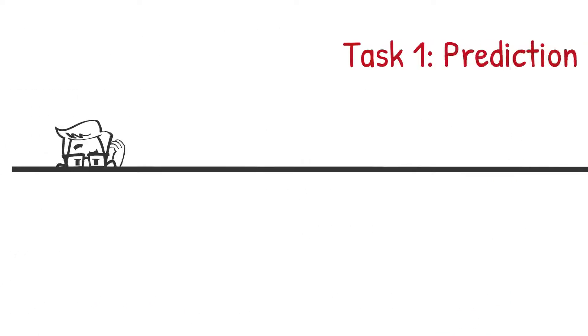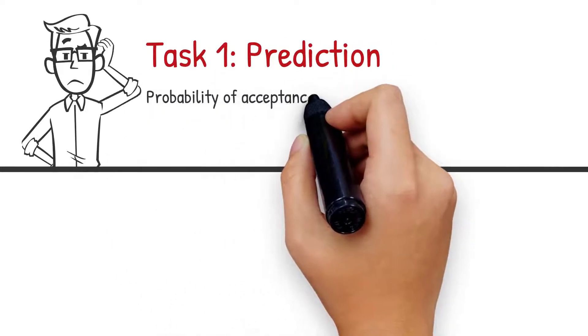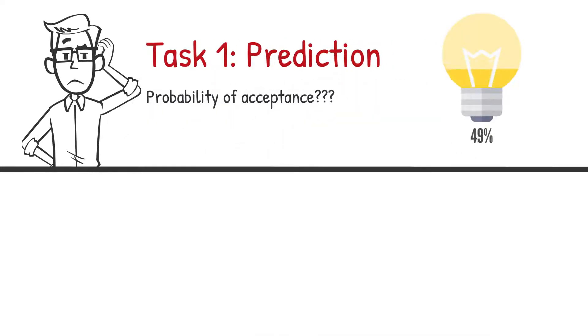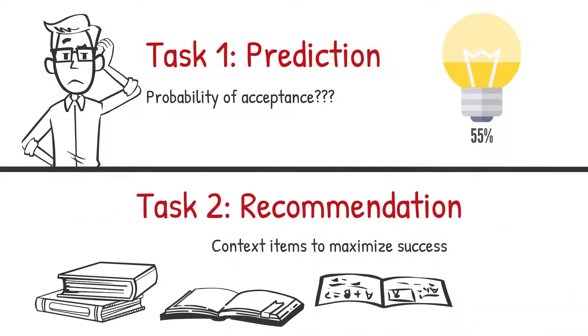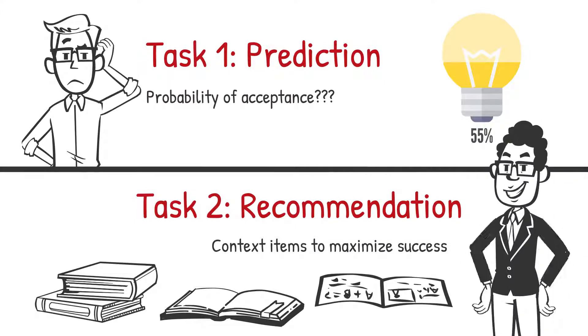What if we can predict the probability of our paper being accepted before the submission? Not confident enough? How about recommending some great papers to read, or recommending some co-authors to join the research project?